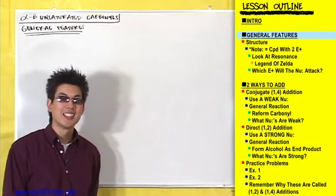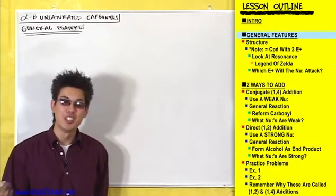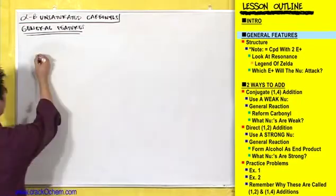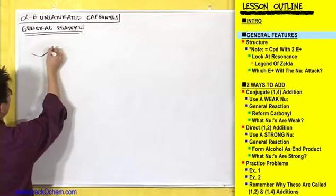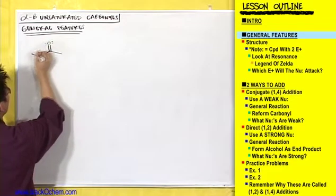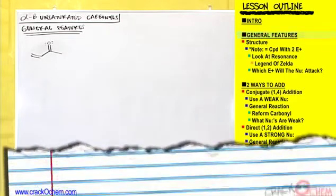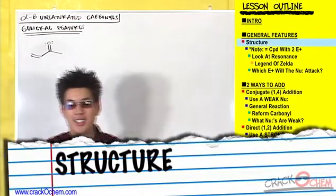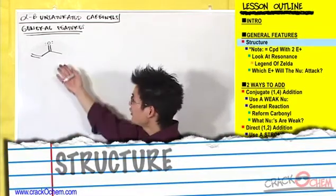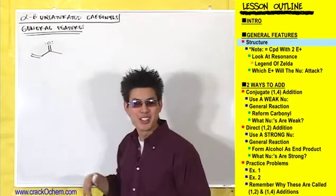Alright, so first things first you guys. Let's see what these alpha-beta unsaturated carbonyl compounds even look like. So this is an alpha-beta unsaturated carbonyl compound, but it's not too scary looking, right?